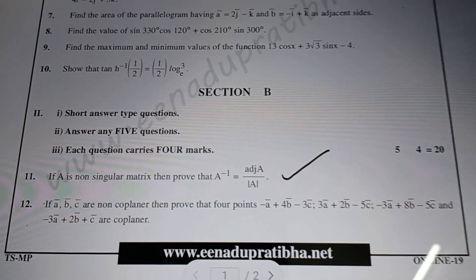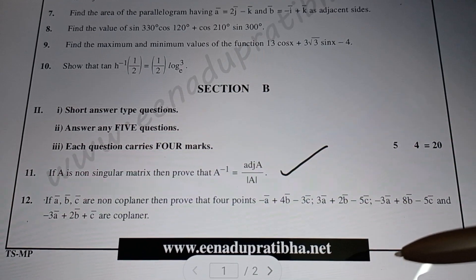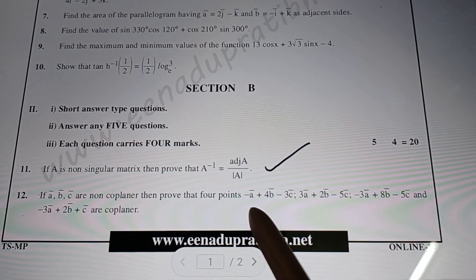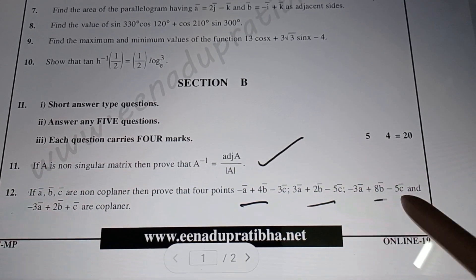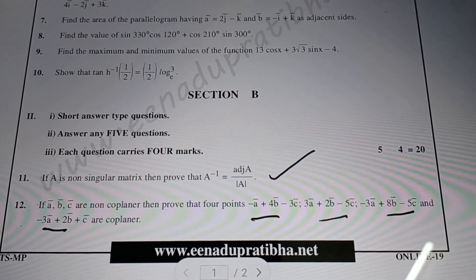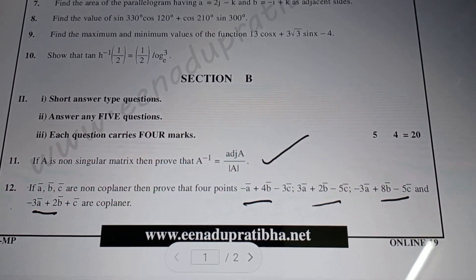The 12th question is on vectors. This is easy - finding vectors like OA, OB, OC, OD, then AB, AC, AD. The determinant problems are very easy for 4 marks.